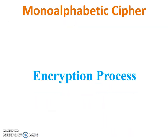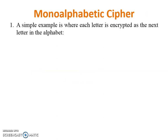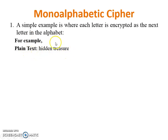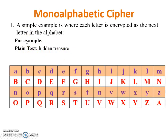Now let's see the encryption process — it is very easy. For example, the plaintext is 'hidden treasure.' As per the rule, I have made one table where each letter is encrypted as the next letter in the alphabet. So A is encrypted with B, B is encrypted with C, and so on.